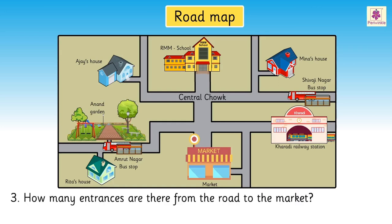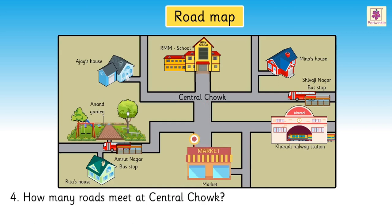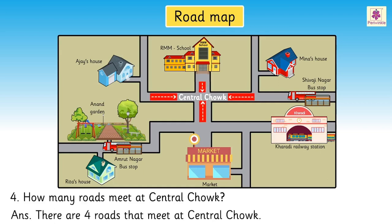Question 3: How many entrances are there from the road to the market? Look, there are two entrances from the road to the market. Question 4: How many roads meet at Central Chalk? Yes, there are four roads that meet at Central Chalk.